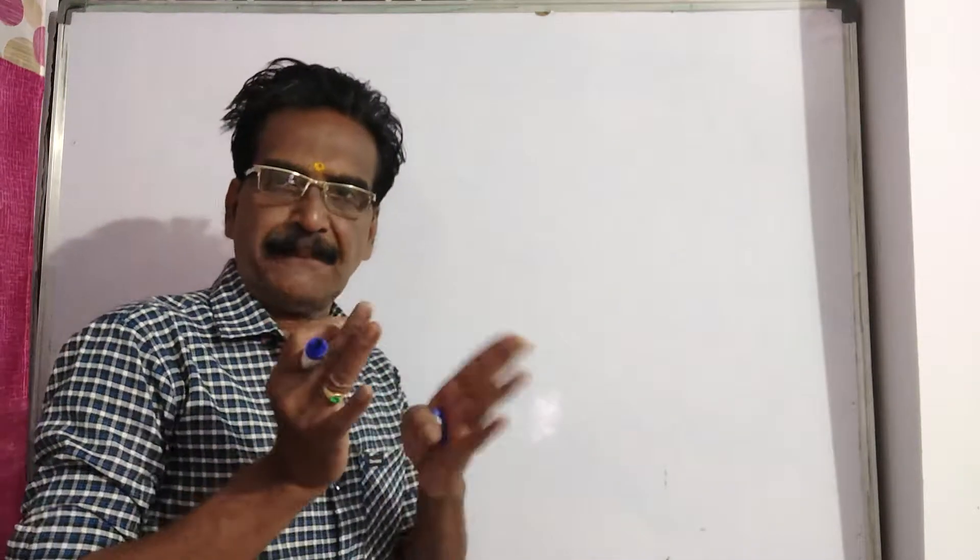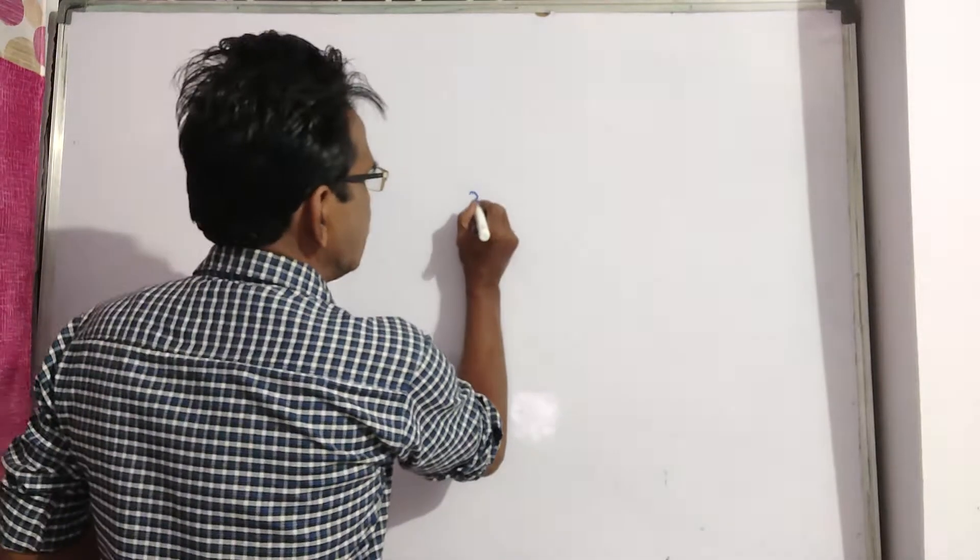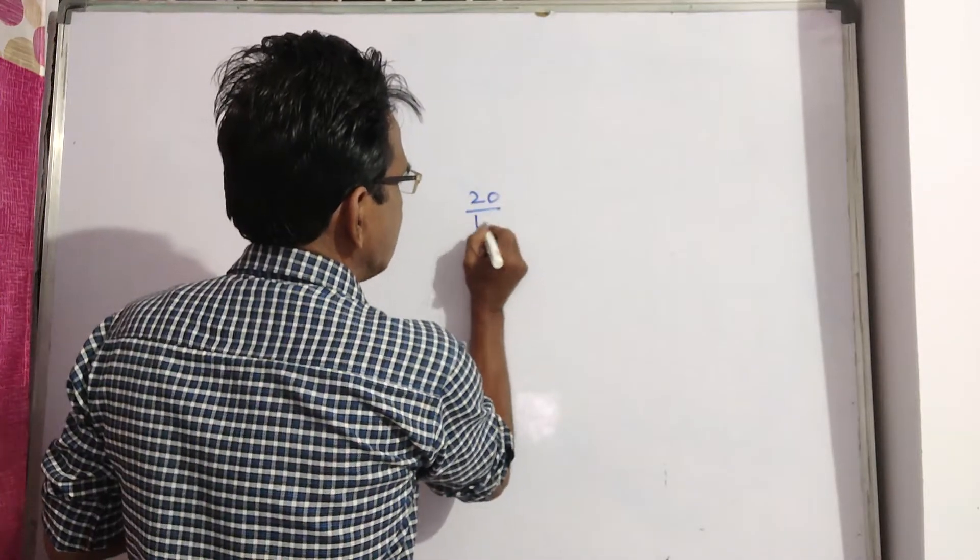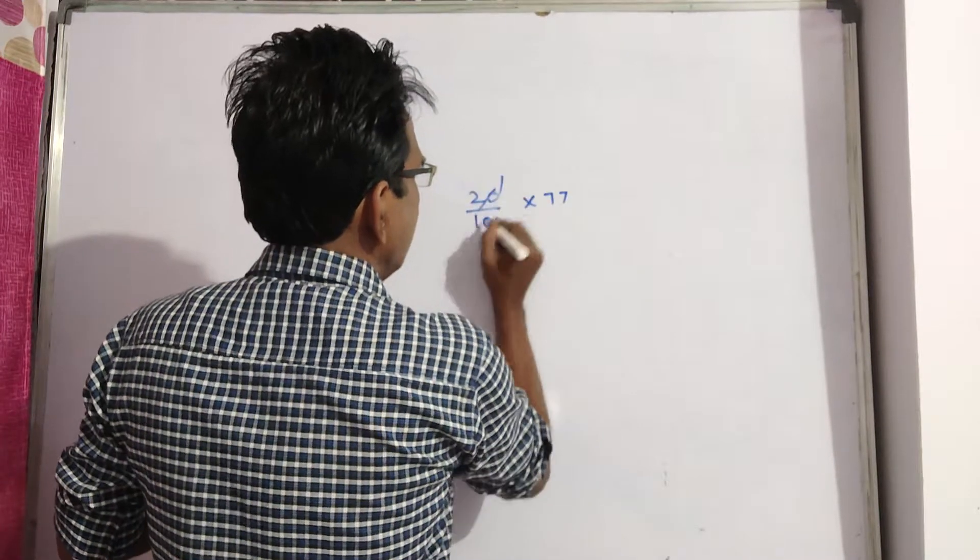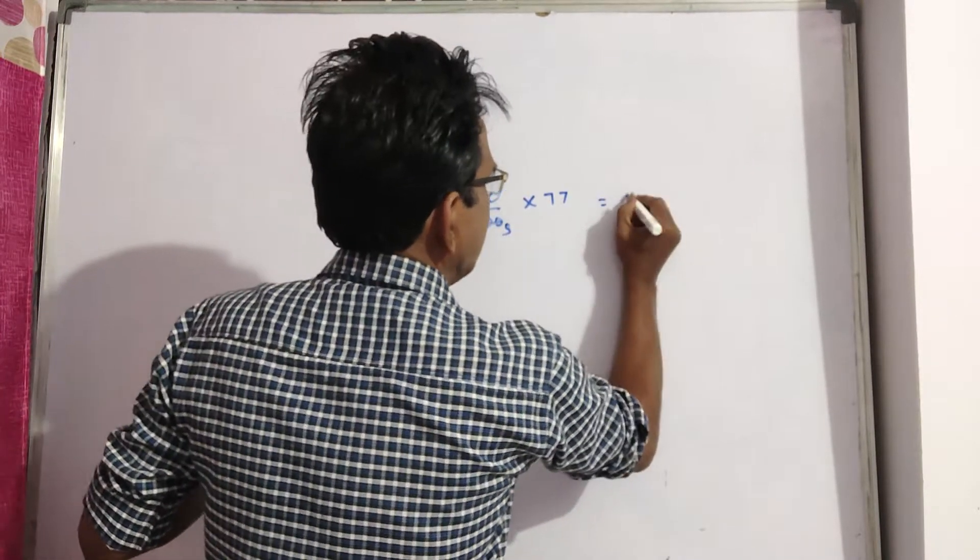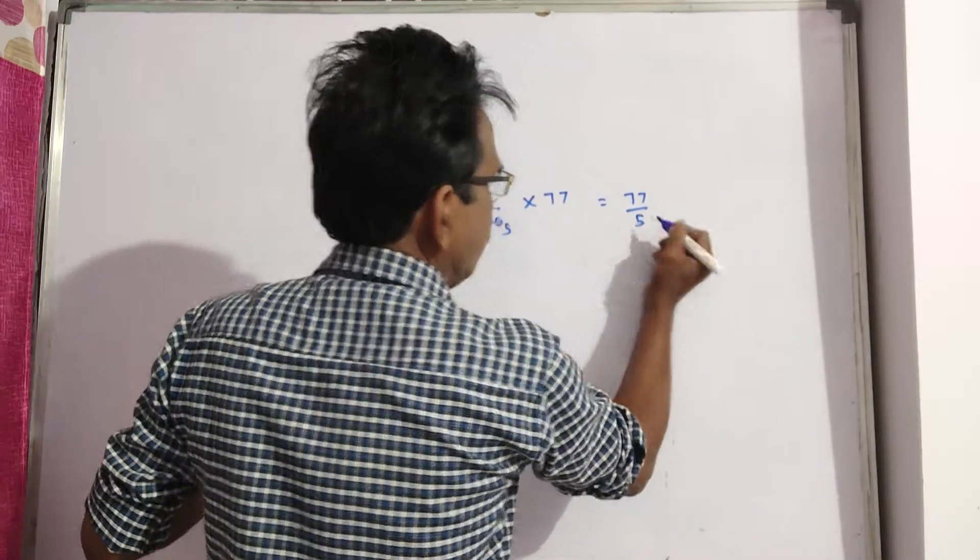See friends, here the reduction is 20%. 20% of 77 is 77 by 5.